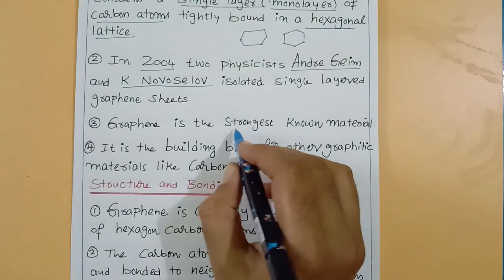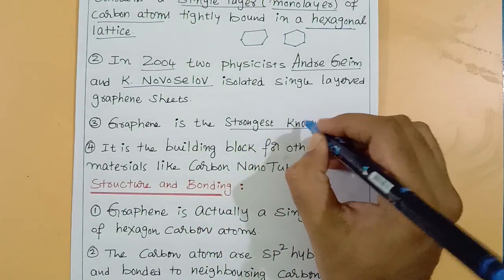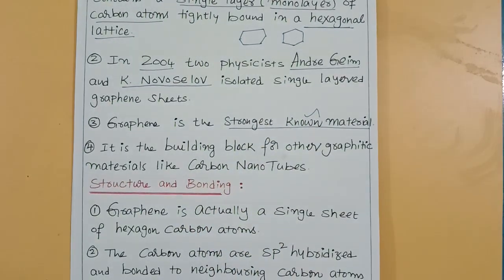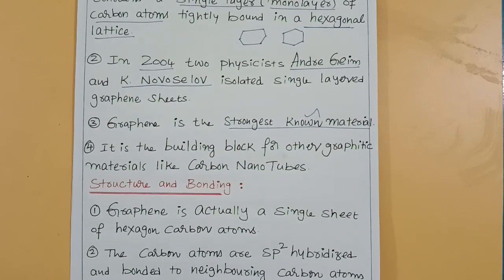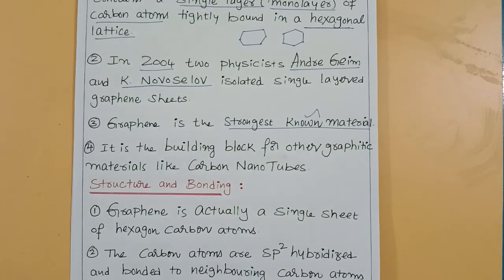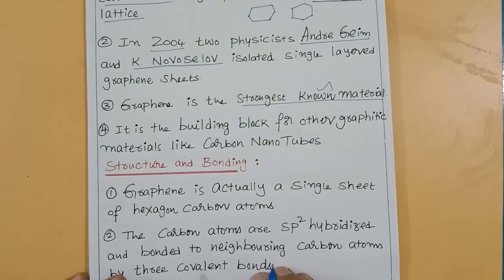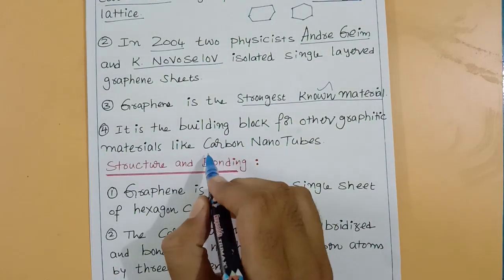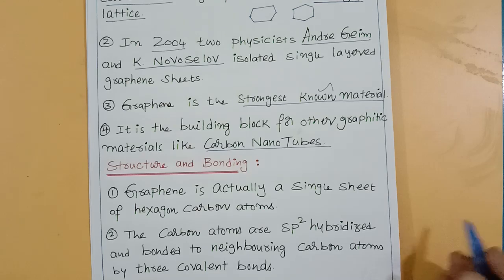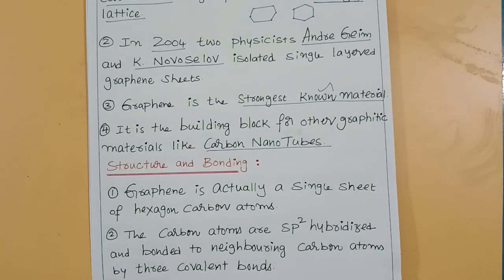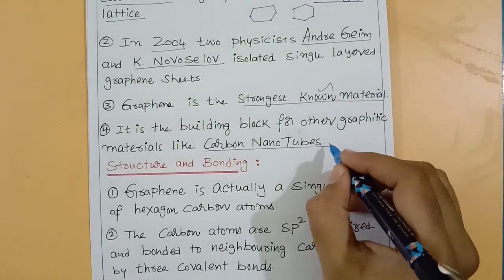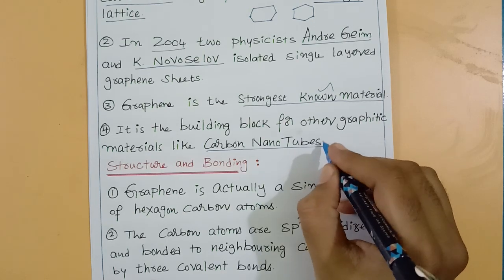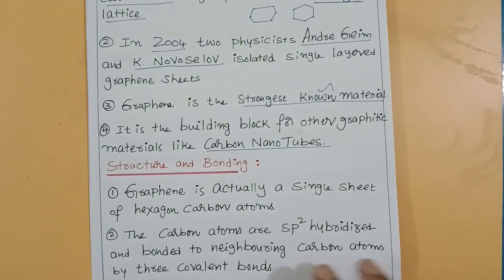Graphene is the strongest nanomaterial — that is a very important property. Graphene is the building block for other graphite materials like carbon nanotubes. Carbon nanotubes are derivatives of graphene.